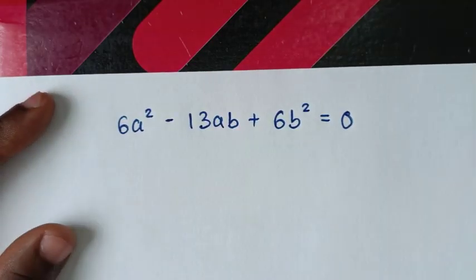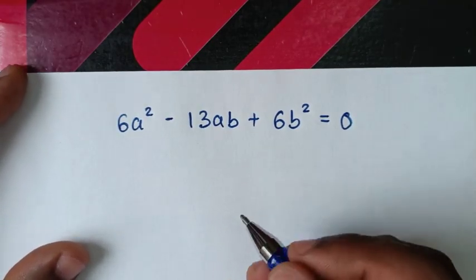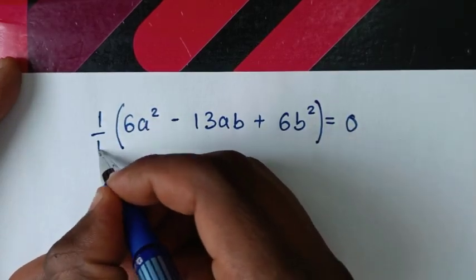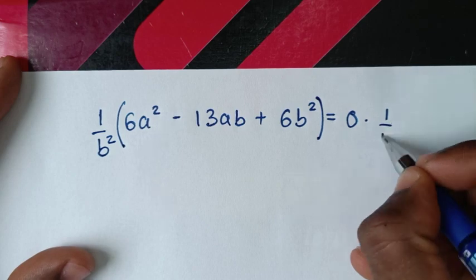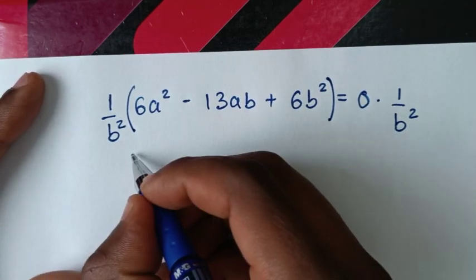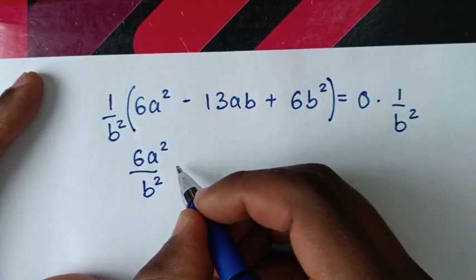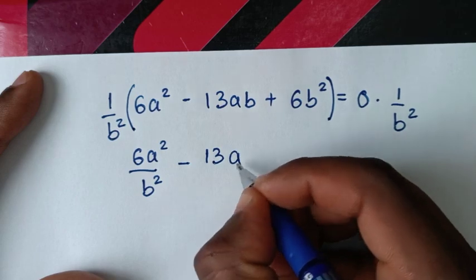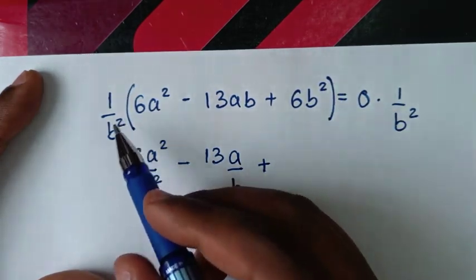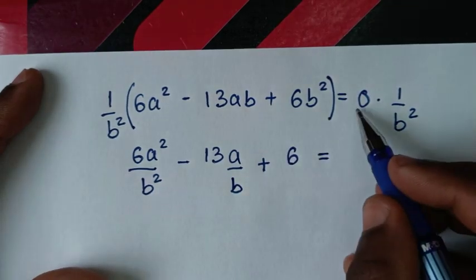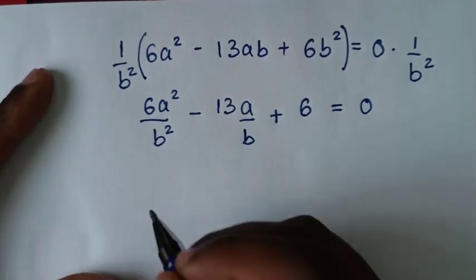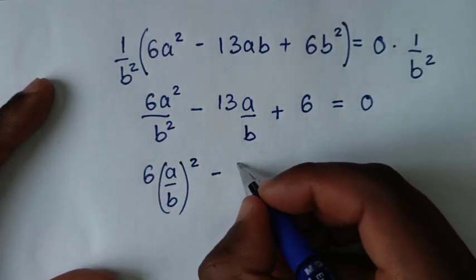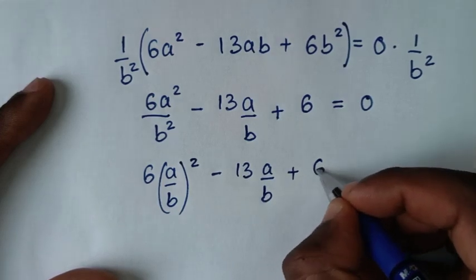Now we make this into quadratic form so we can apply the quadratic formula. We divide both sides by b²: 6a²/b² - 13a/b + 6 = 0. Since a²/b² = (a/b)², this becomes 6(a/b)² - 13(a/b) + 6 = 0.